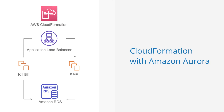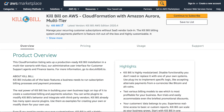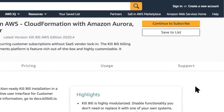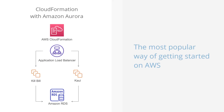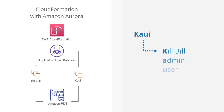There are two deployment options: CloudFormation with Amazon Aurora and Single AMI with MariaDB. CloudFormation with Amazon Aurora is production-ready in minutes, and it's the most popular way of getting started on AWS. It sets up a highly available Kill Bill installation with Kaui, our administrative user interface for customer support agents and finance teams.